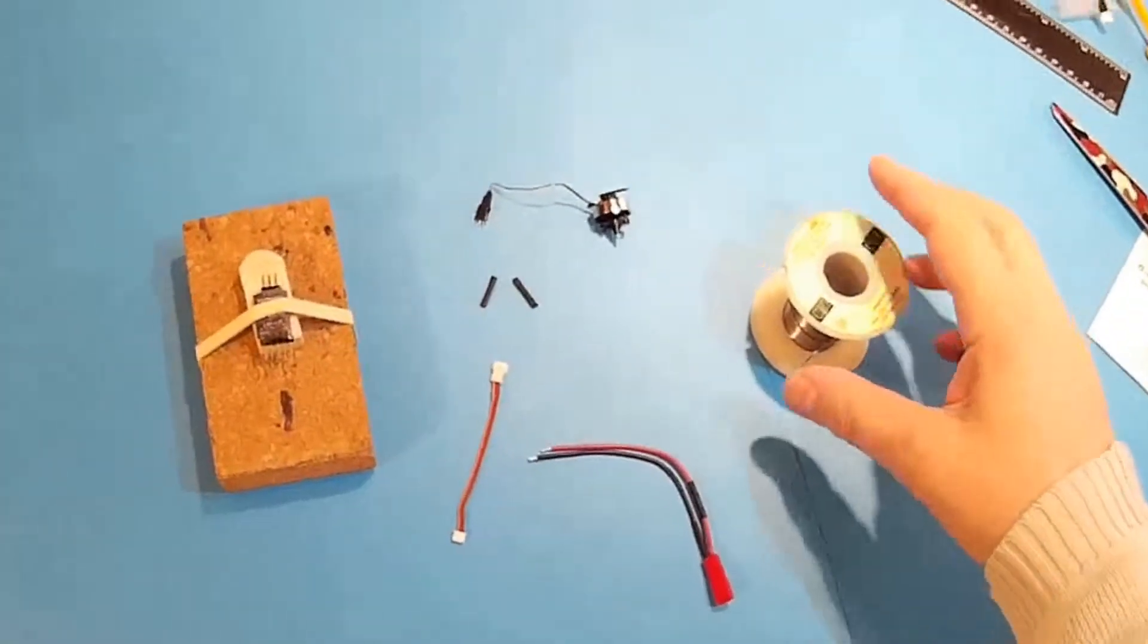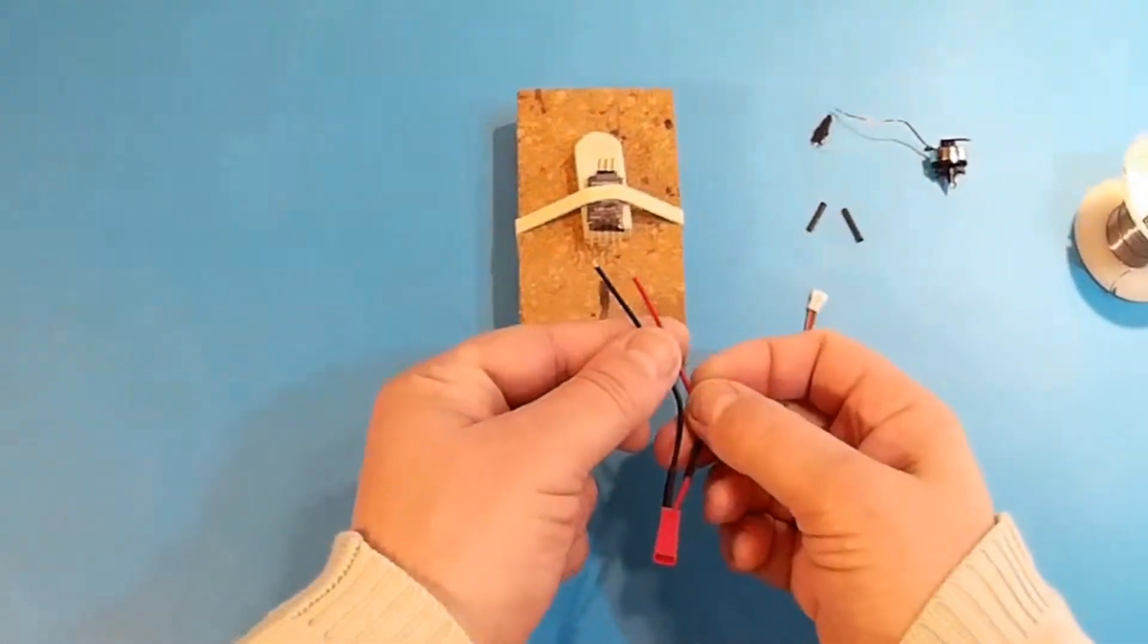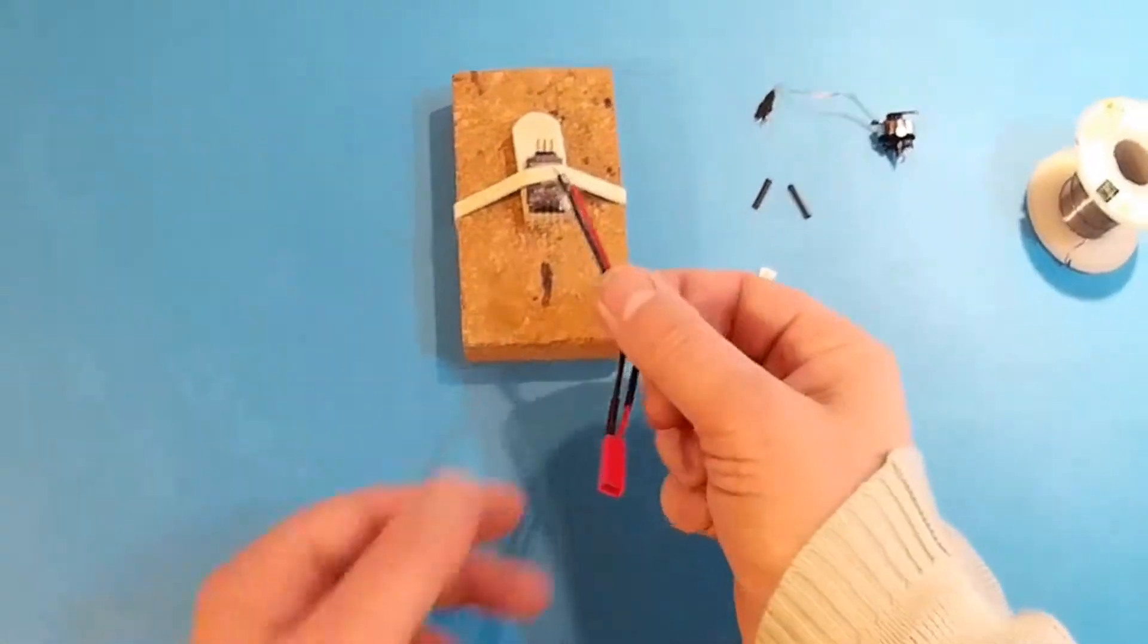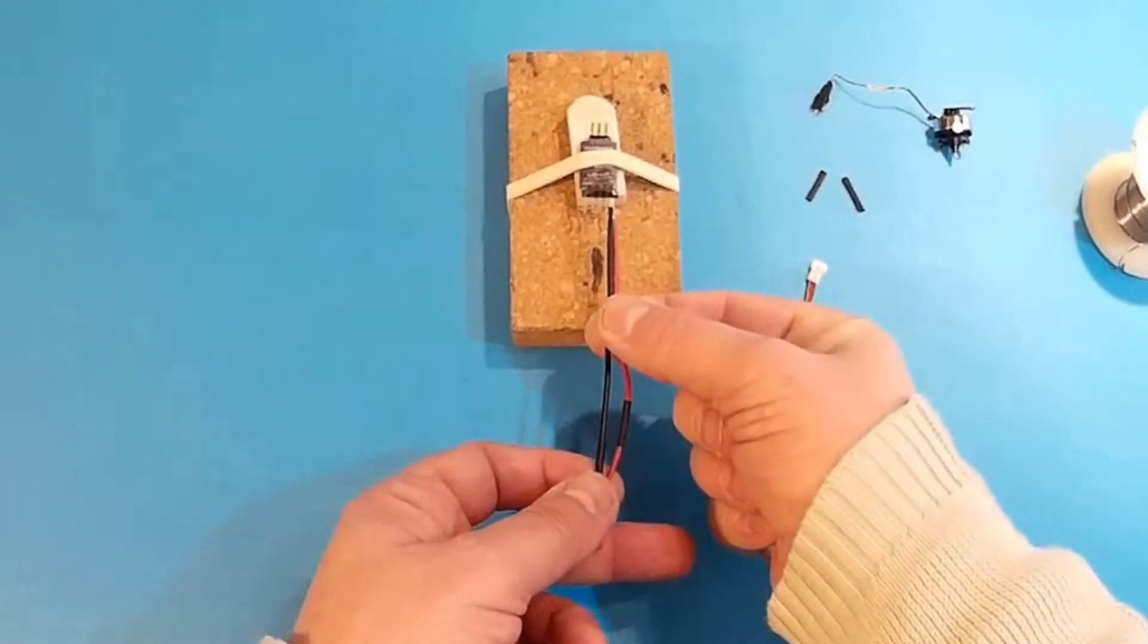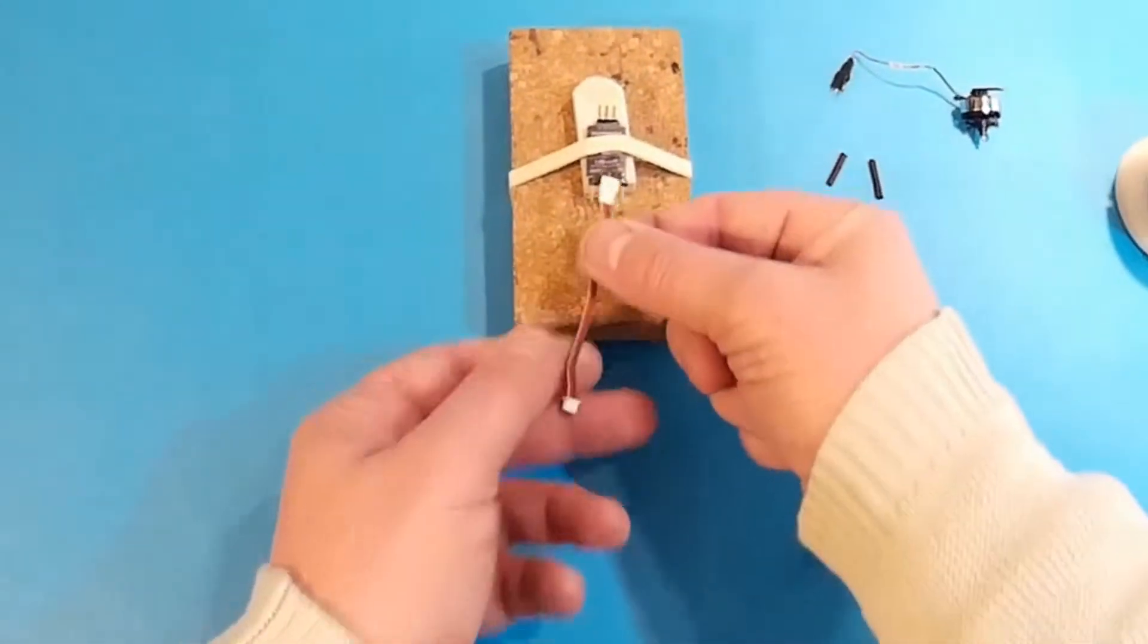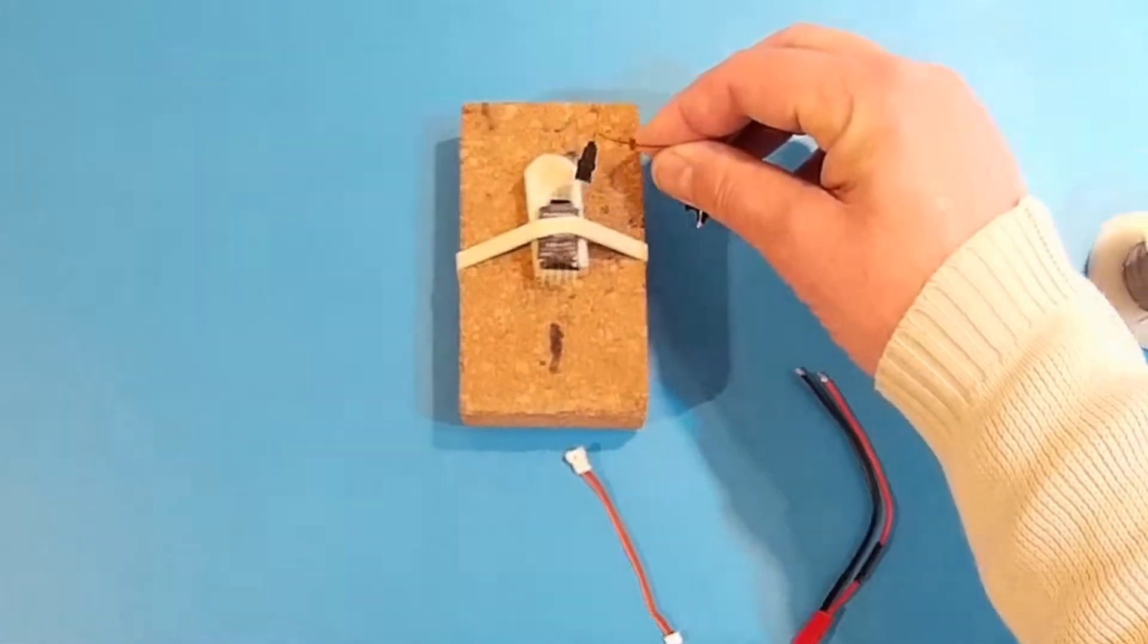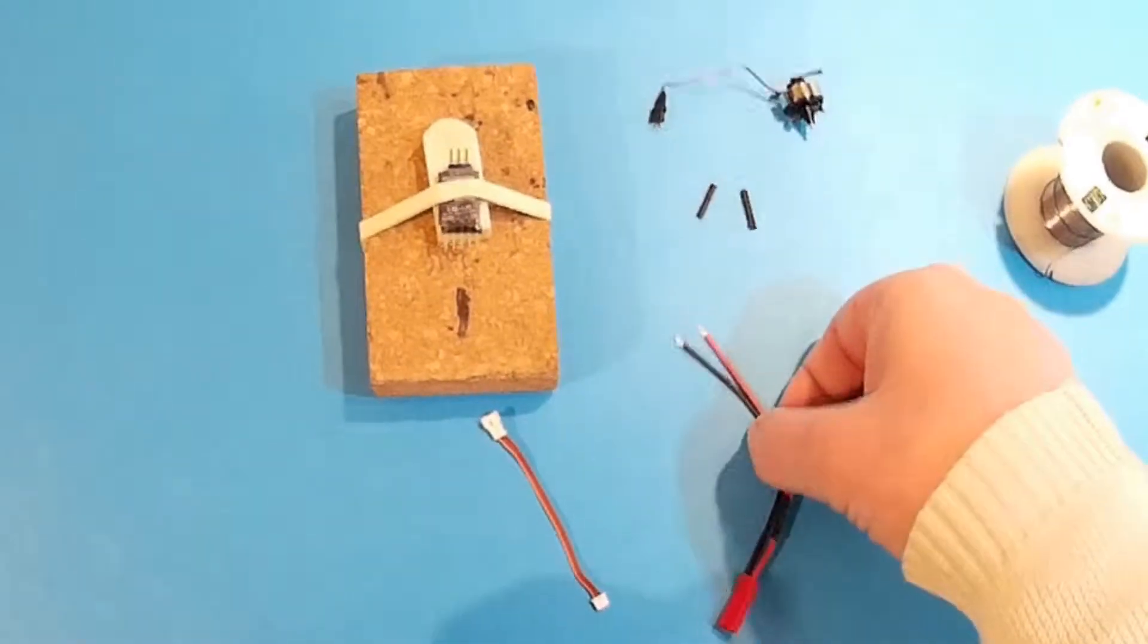Okay, so the next part I need to do is solder the connections onto the speed controller, and that's the battery input, the transmitter control cable, and the speed controller connection.